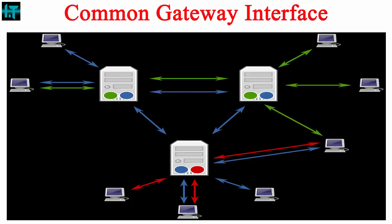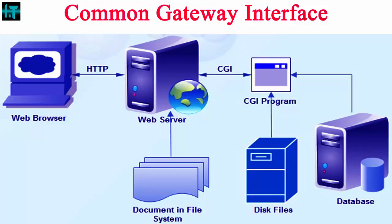CGI applications perform specific information processing, retrieval, and formatting tasks on behalf of web servers. Now talking about the working of CGI: a web browser running on a client machine exchanges information with a web server using the Hypertext Transfer Protocol, known as HTTP. The web server and a CGI program normally run on the same system.